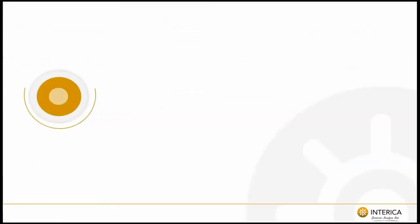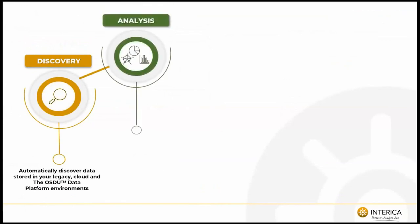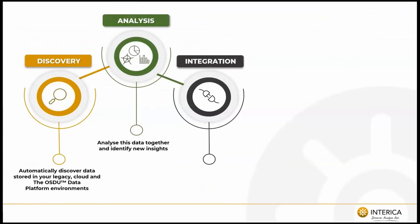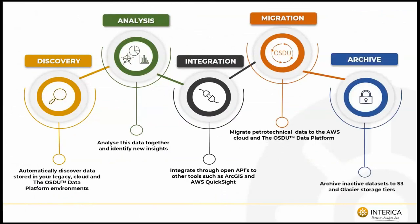Through this session, we have demonstrated how Interica OneView can be used to discover data in the OSDU data platform along with other storage environments. How users can analyze metadata and spatial data to find the right data when they need it. New integration with AWS QuickSight showing how users can quickly build dashboards and create new ways to analyze the information collected through open RESTful APIs. We have explained how IOV will in the future support data ingestion to the OSDU and how users can today archive data to object storage. Thank you.